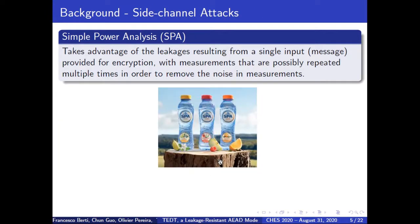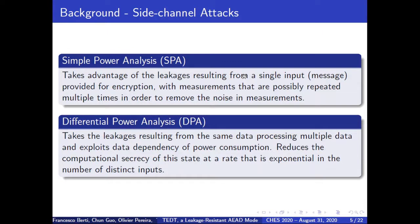As another background, we now reveal side-channel attacks. When an AEAD is implemented and deployed, the implementation may leak information about the internal state via side-channel information, most notably the power consumption. There are two approaches to leverage power measurements. The first is simple power analysis, SPA. It takes advantage of the leakages resulting from a single input or message provided for encryption, with measurements possibly repeated multiple times in order to remove noise. The second is more powerful: differential power analysis, DPA. It takes leakages resulting from processing multiple data and exploits data dependency of the power consumption.